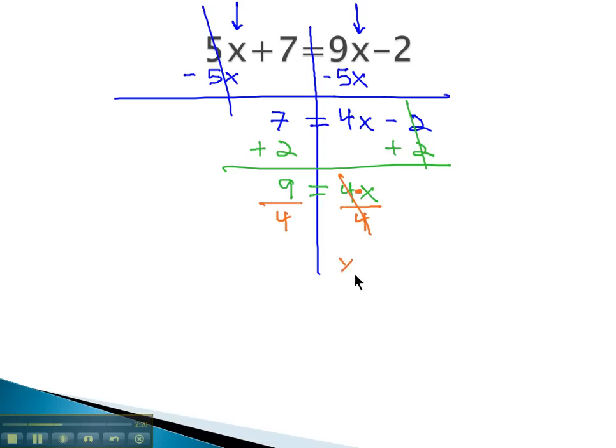As we show our work like this, notice the answer on the left side looks like 9 over 4, or the fraction 9 fourths, which is our final solution. The value for x that makes this equation true on both sides of the equation is 9 fourths.